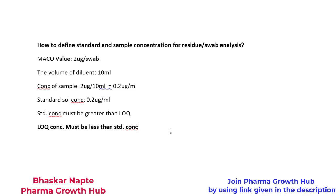But if I run the development experiment and find that my LOQ of this method is greater than 0.2 microgram per mL, that is not acceptable. Then what I am going to do is change the chromatographic parameters — I may change column dimensions, I may change injection volume — and understand whether these changes are helping me achieve a limit of quantitation below my standard concentration of 0.2 microgram per mL in the given case.